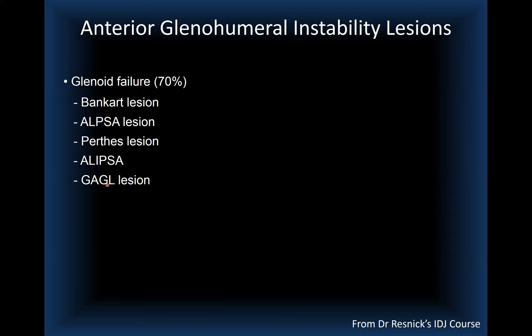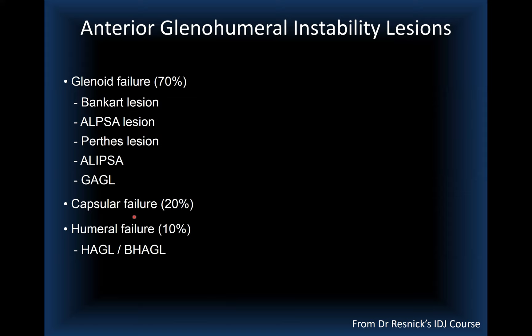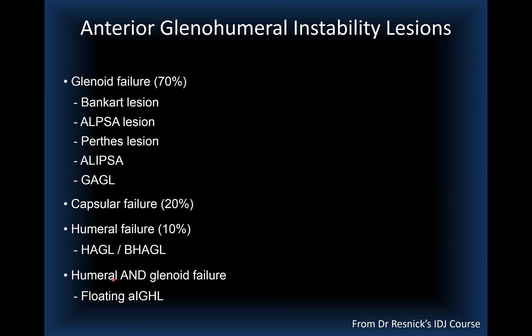Humeral lesions include HAGL (humeral avulsion of the glenohumeral ligament) as a soft tissue avulsion, or bony HAGL when a piece of bone is avulsed at the humeral footprint. Occasionally the hammock fails on both sides, leaving the anterior band of the glenohumeral ligament floating. In my practice, capsular and humeral failure each occur about 10–15% of the time.